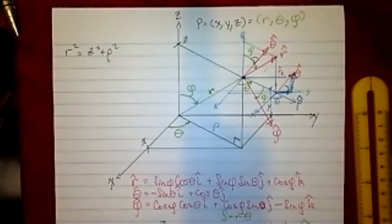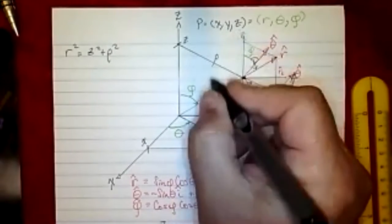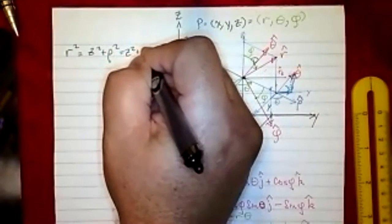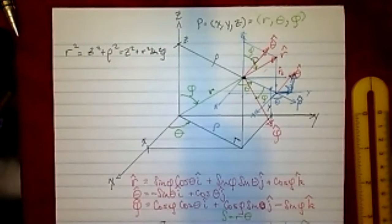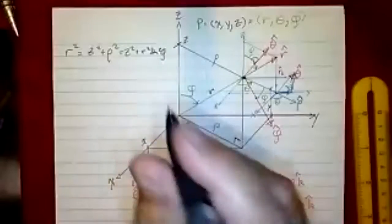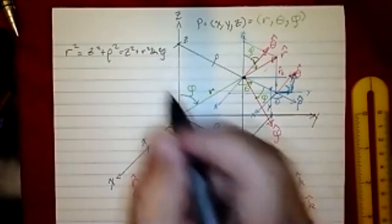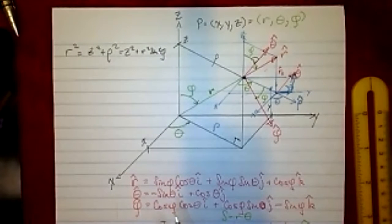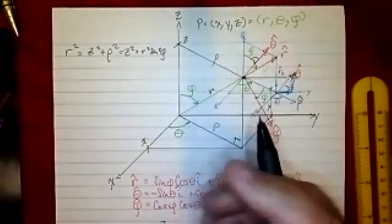That's cool because rho also turns out to be r times the sine of phi. So we'd have z squared plus r squared sine squared phi. The problem is we've got rho and we've got z, but we don't really know r — we're in terms of r. So what are we to do? That looks kind of confusing.